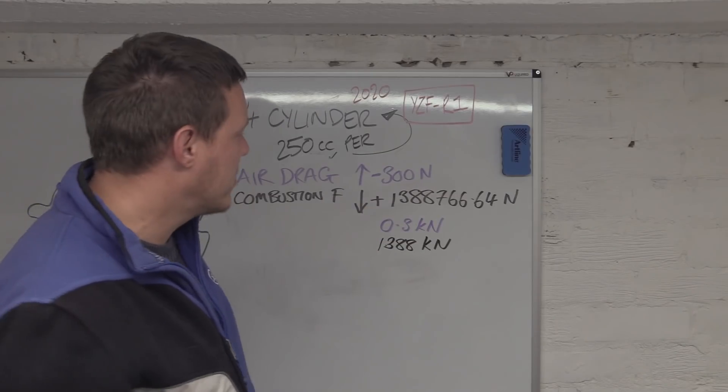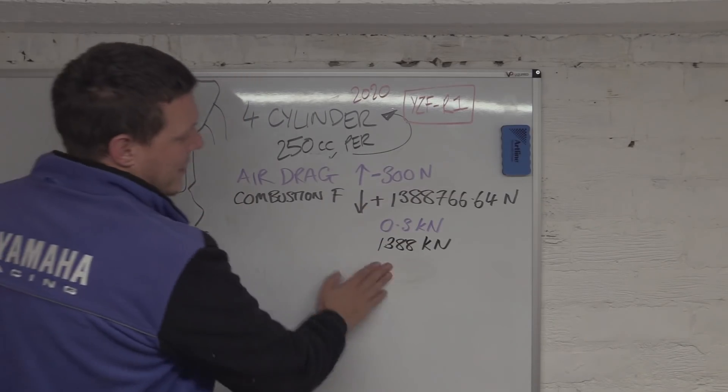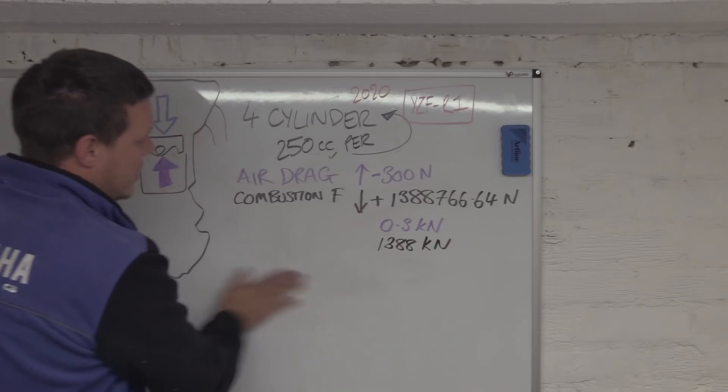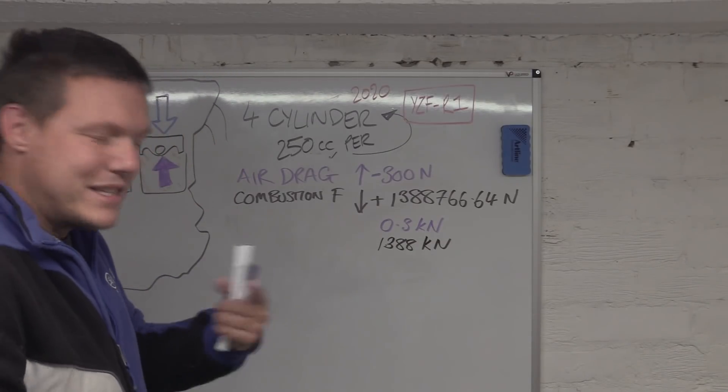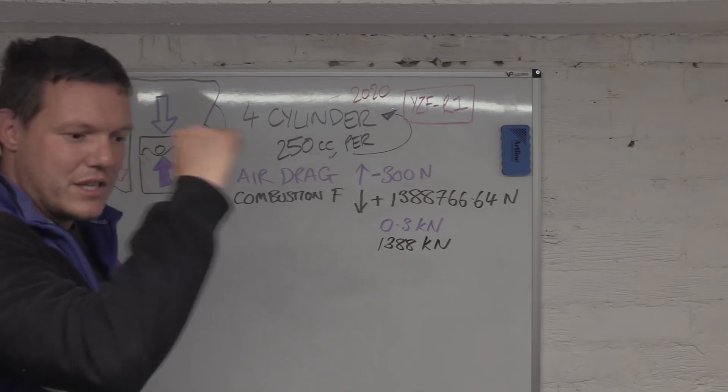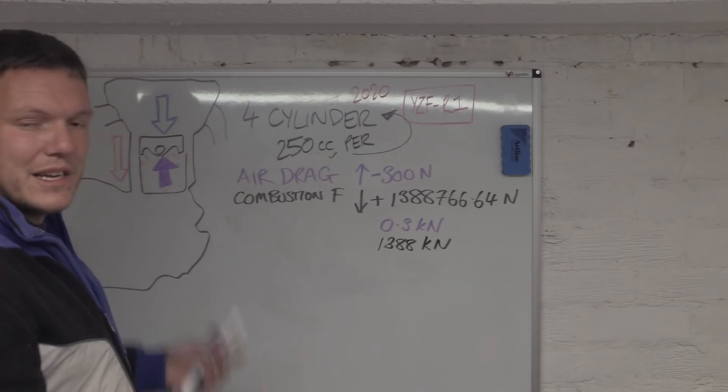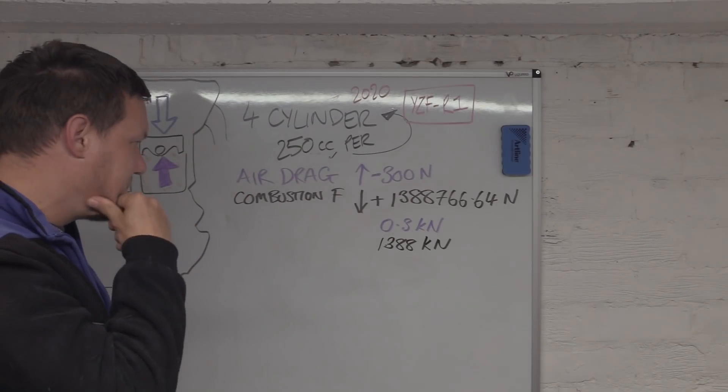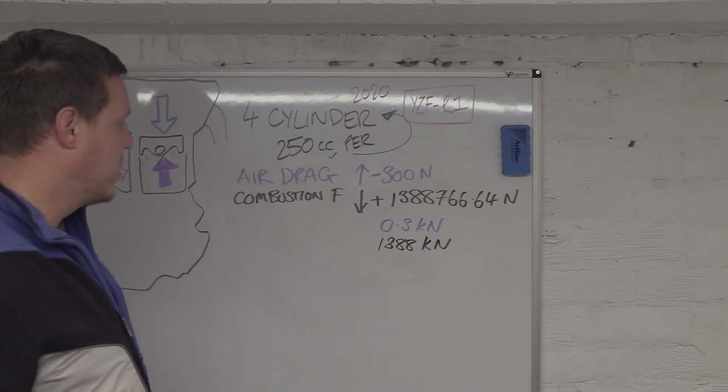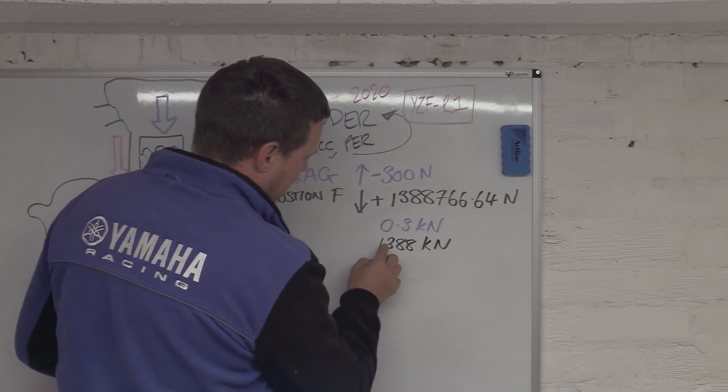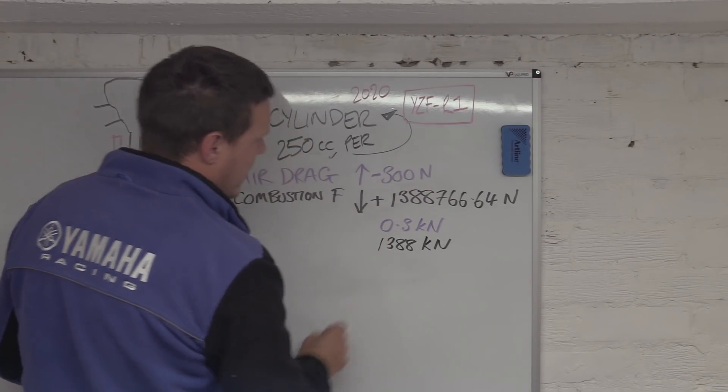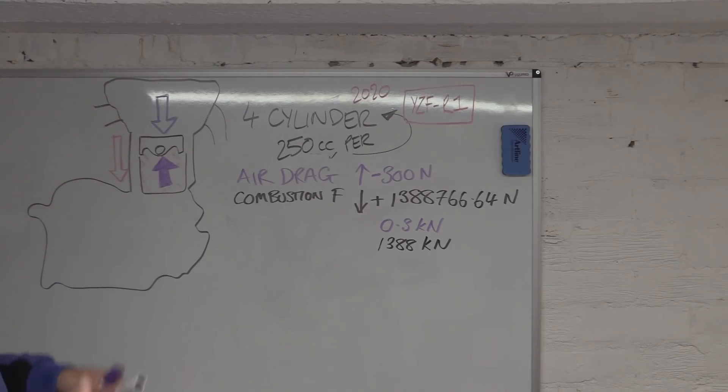The whole point is it's just that bang, that initial bang, and then it's exhaust, intake, compression, and that's basically going to see that through and propel you across the earth. So it might seem like a big number initially, but then when you incorporate it into everything, yes you've got another cylinder firing. Once we've got this worked out, 1,388 kilonewtons versus 0.3, what is this as a percentage?